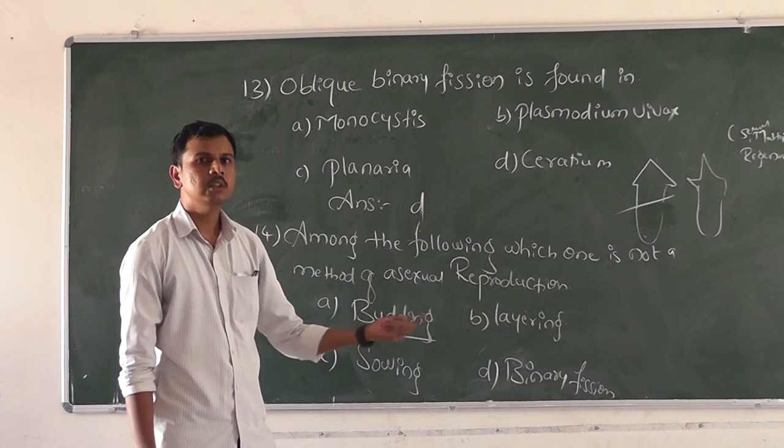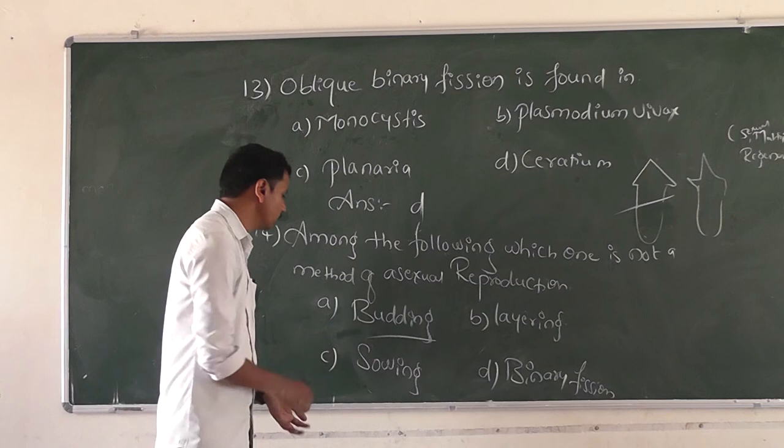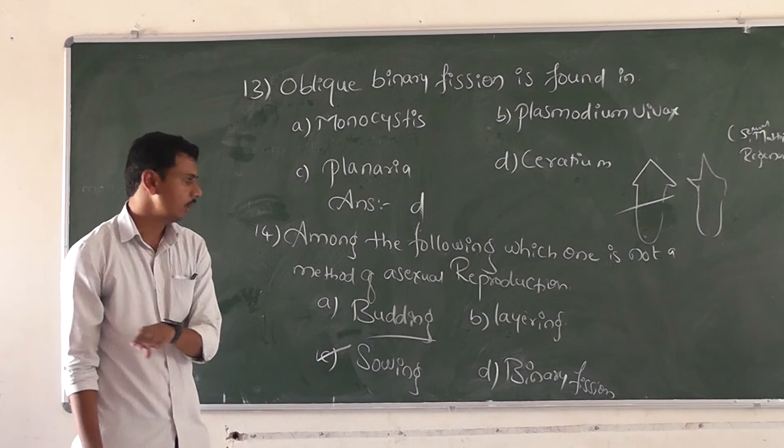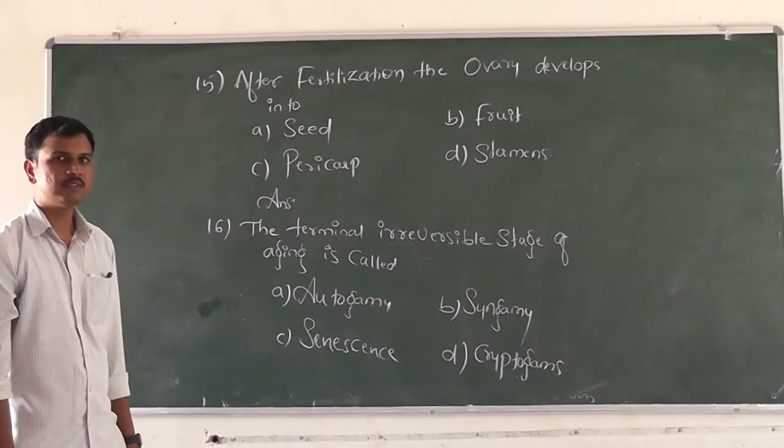Binary fission means one parent body separates into two bodies. The right answer is option C, sowing — it is not an asexual method. The remaining three — budding, layering, and binary fission — are asexual methods.